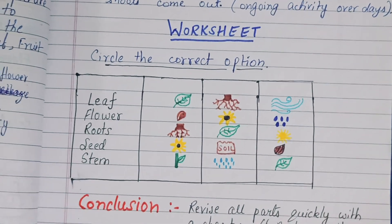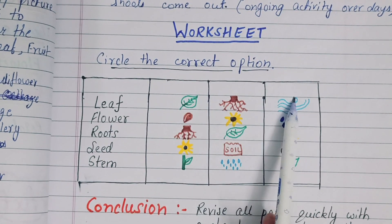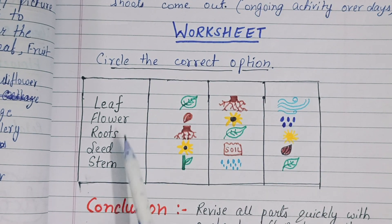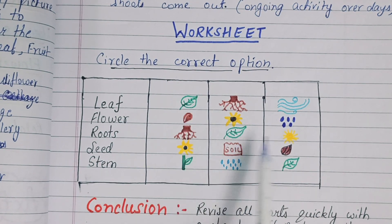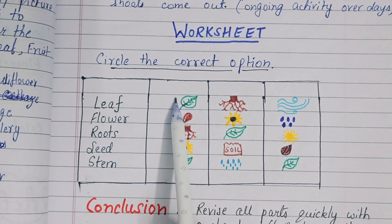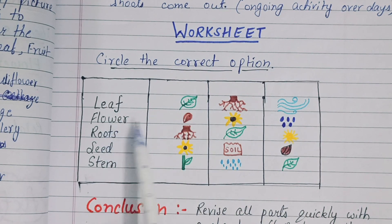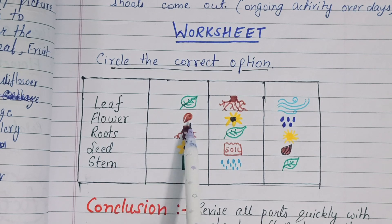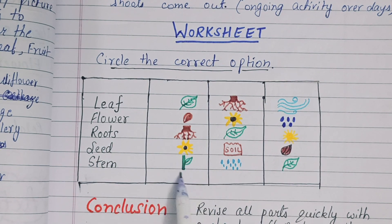Next, worksheet: circle the correct option. These are parts of a plant and students will circle accordingly — leaf, flower, roots, seed, and stem.